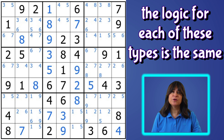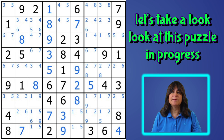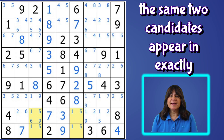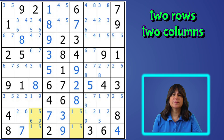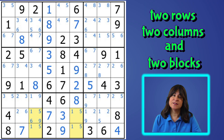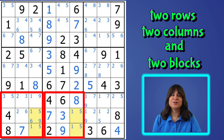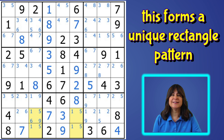The logic or pattern for all of these types of unique rectangles is basically the same. Let me explain by using this puzzle already in progress. Here you can see a one-five pair in the highlighted boxes. The definition of a unique rectangle is that the same two candidates appear in exactly two rows, two columns, and two blocks. And that's what we have here — the one and the five are in exactly two rows, exactly two columns, and exactly two blocks. So this forms a unique rectangle pattern.